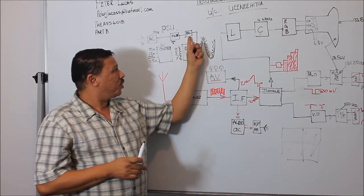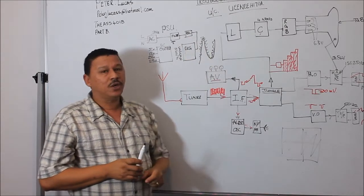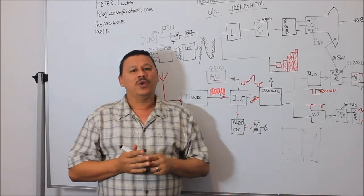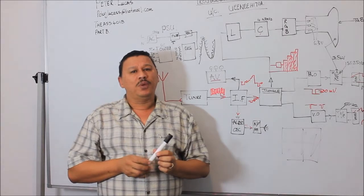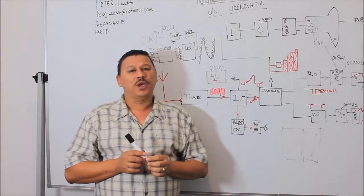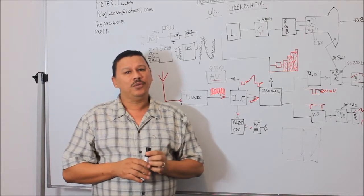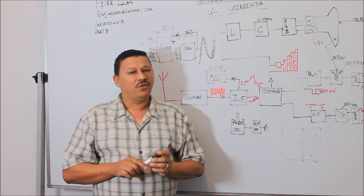What sometimes also happens is that your rectifier stage goes faulty and instead of having a bridge rectifier with four diodes that's working properly, you have maybe two diodes that's working properly and two that's open circuit. You would still have power coming through but your picture quality would be very wavy.